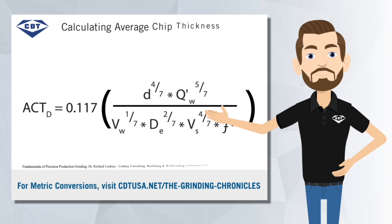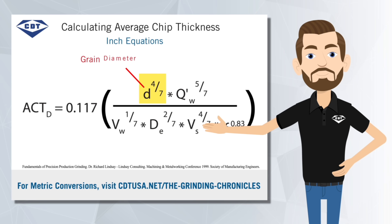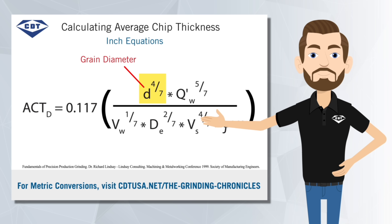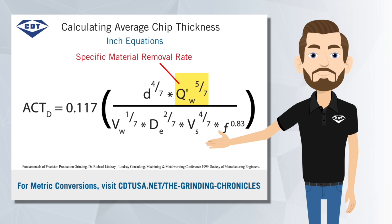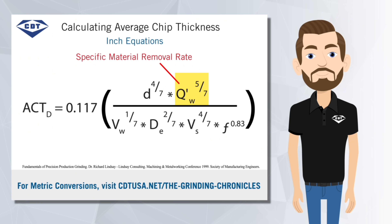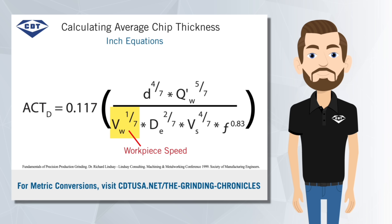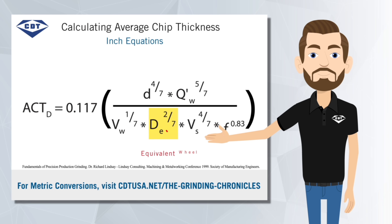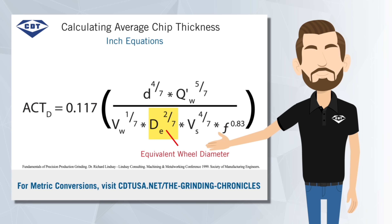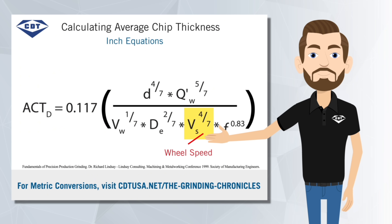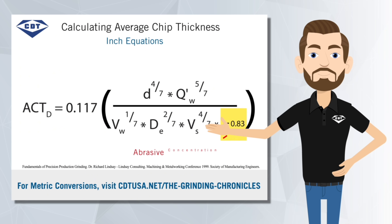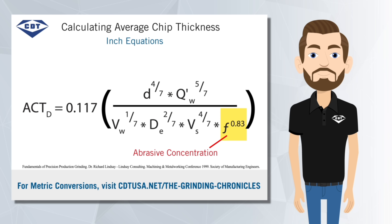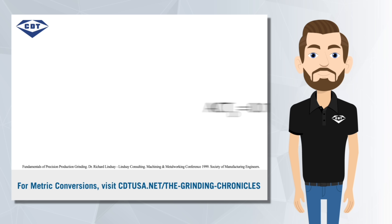In the top half — the numerator — you'll see grain diameter, represented by lowercase d, and specific material removal rate, or q'. In the denominator, there are several important variables: your workpiece speed, V sub W; the equivalent wheel diameter, D sub E; the wheel speed, V sub S; and abrasive concentration, simply noted as F.